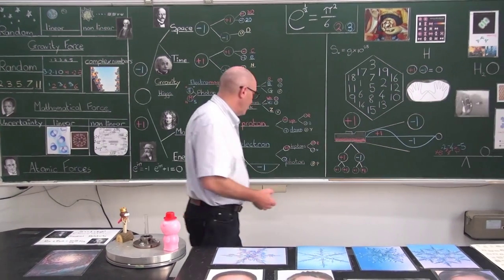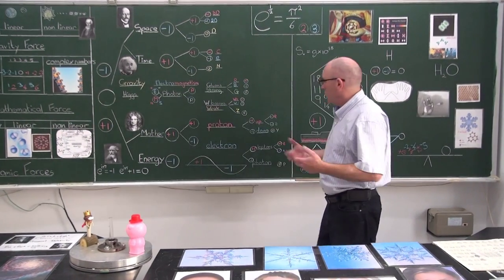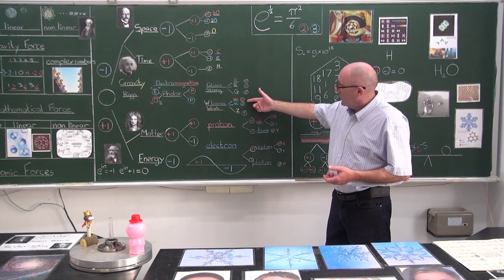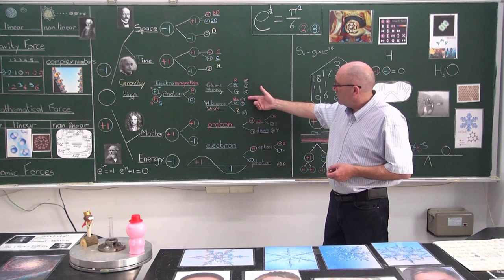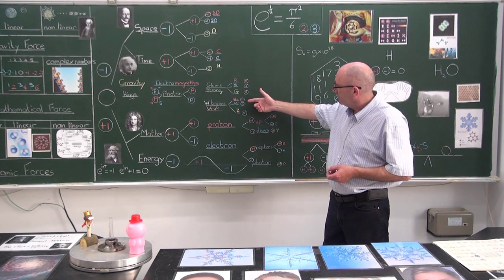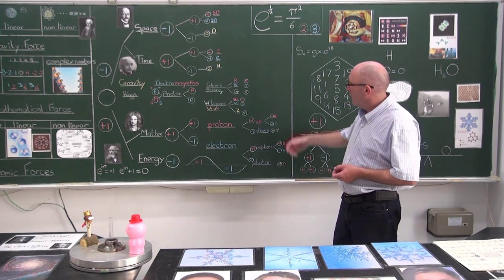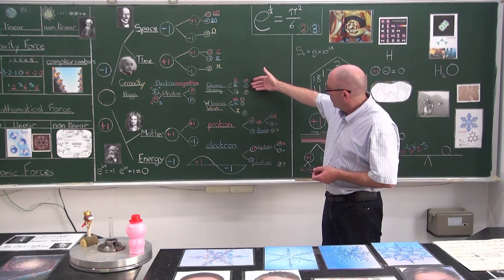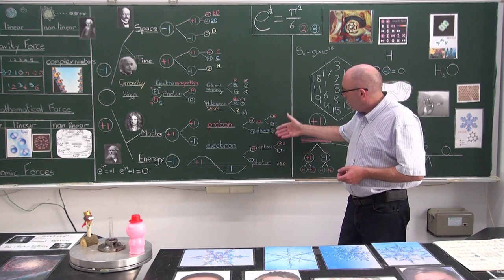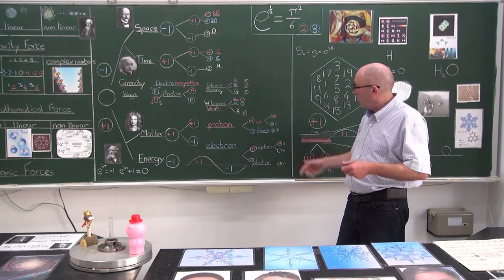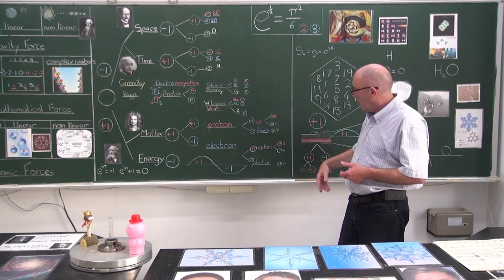Down here at the bottom, I've got relationships, plus 1, minus 1, 0. Even things like the forces, the W boson, plus W, minus W, the Z boson, which is neutral. Gluons, red, blue, green. The quarks, I separate the proton into 2, up and down, but I must have 3, red, blue, and yellow.